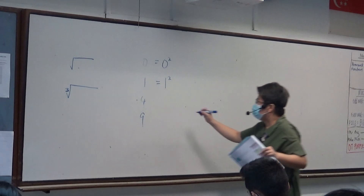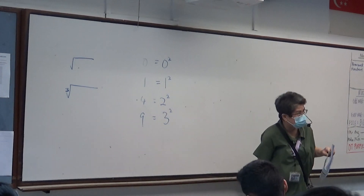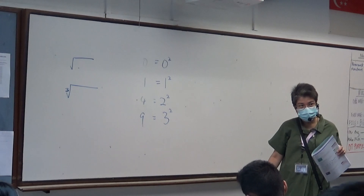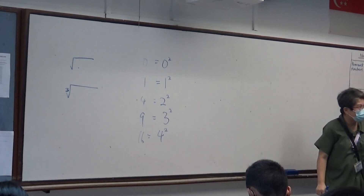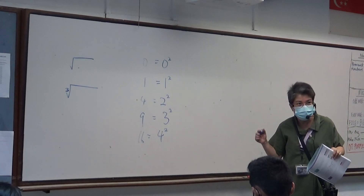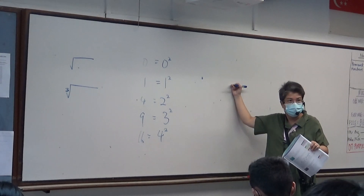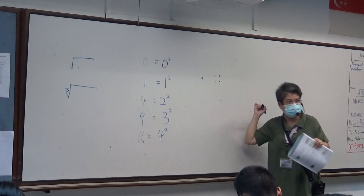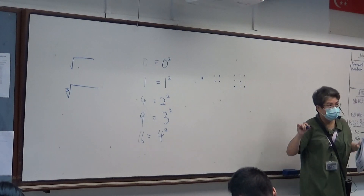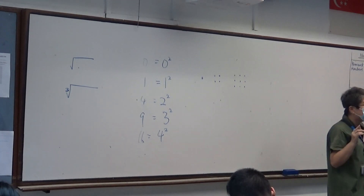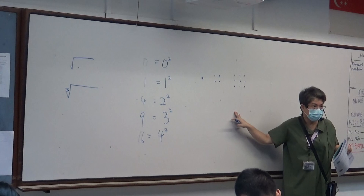One times one. This one is what? Two squared, right? Two times two. What's this? Three squared. This one is four — square numbers. Can you tell me what's the next square number? Sixteen, because it's four squared. So all these are square numbers. Why are they called square numbers? Because I can put one in one block, four in a square block, nine in a square. Zero is also a square number because it's zero squared. So square numbers are called that because I can also draw squares through the dots.